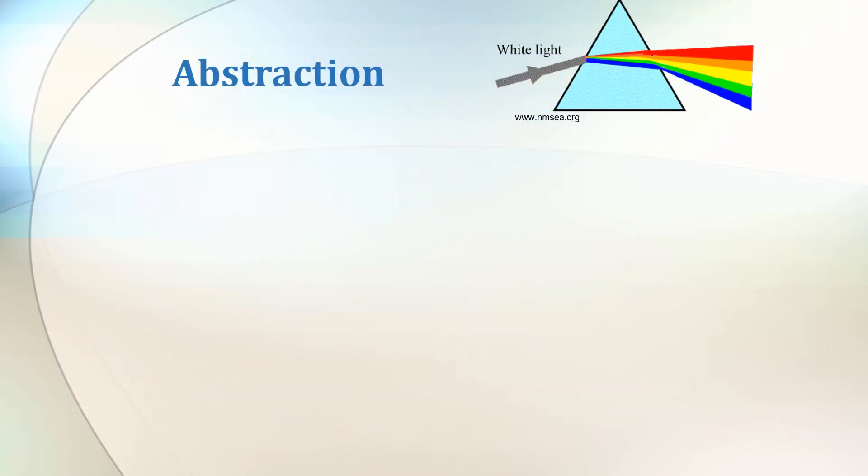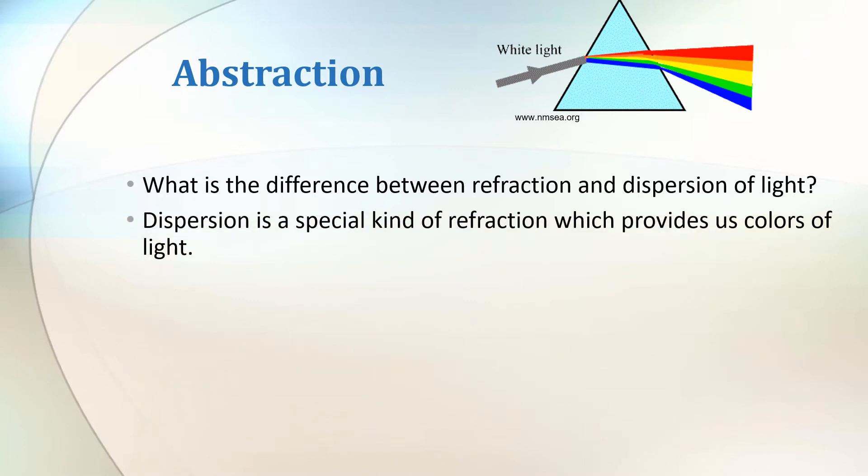Before we can answer this question, we need to know first the difference between refraction and dispersion of light. This dispersion is a special kind of refraction which provides us colors of light.